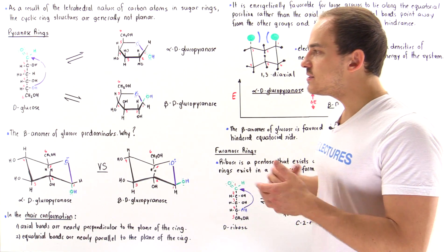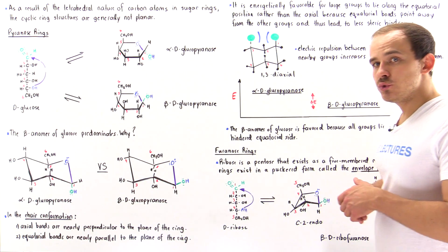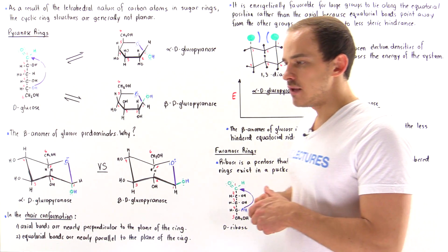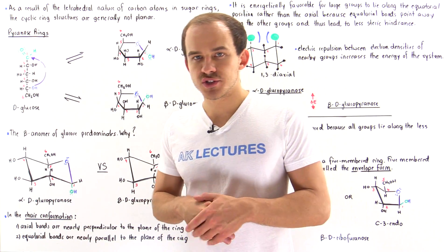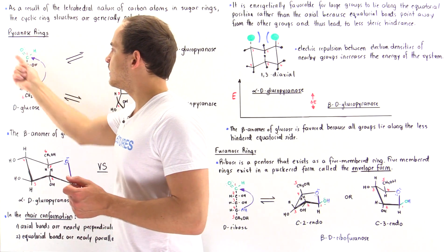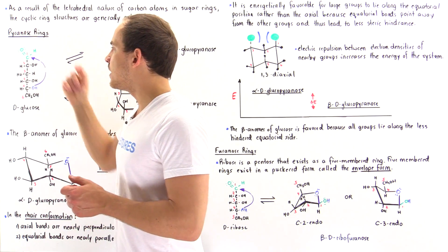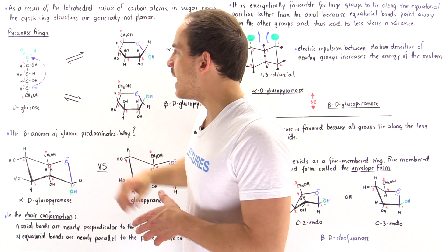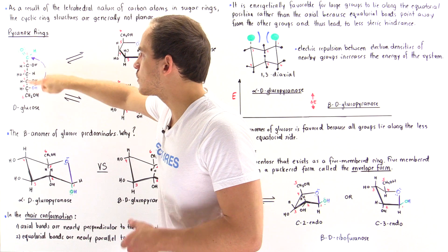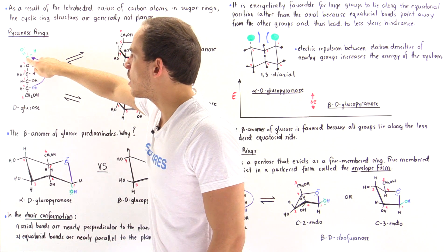So let's take a look at glucose. Glucose is an example of an aldohexose. What that means is it contains an aldehyde group on one end and it contains six carbon atoms: carbon one, two, three, four, five, and six.